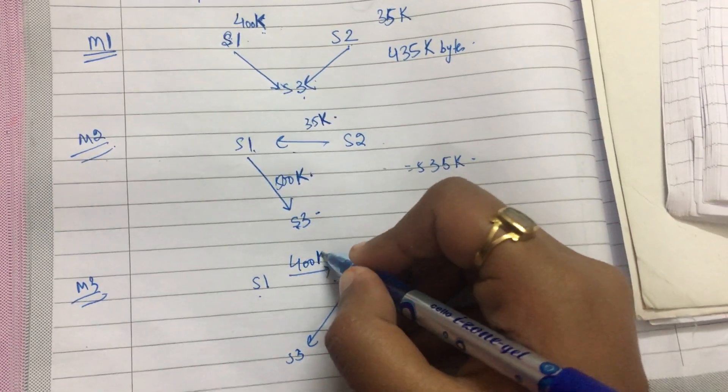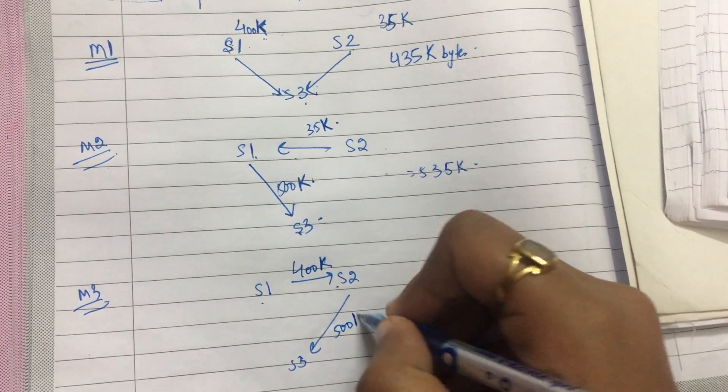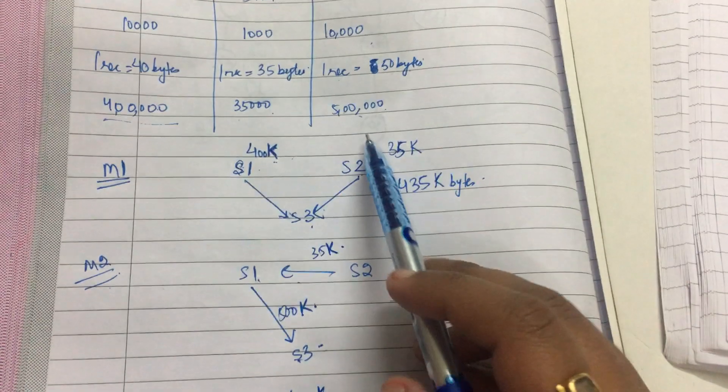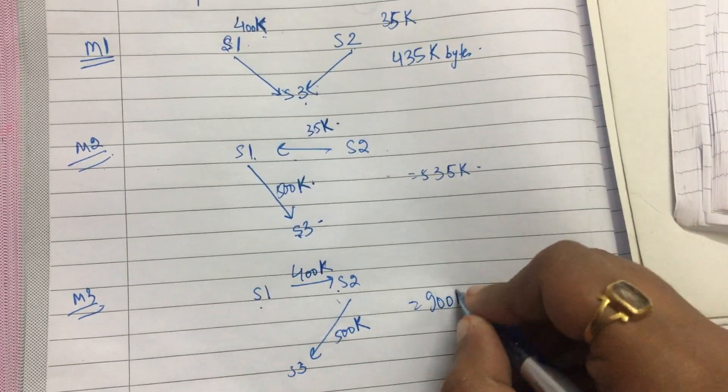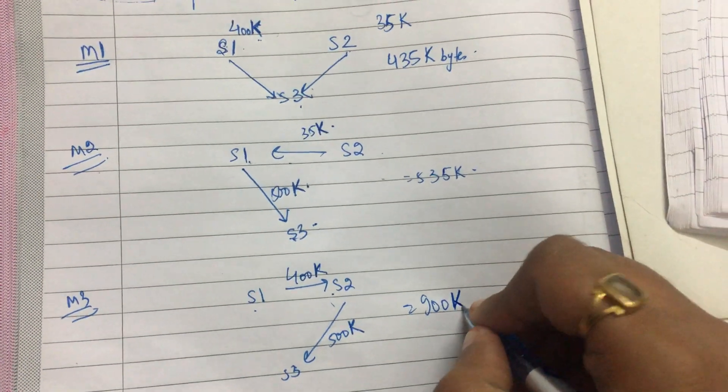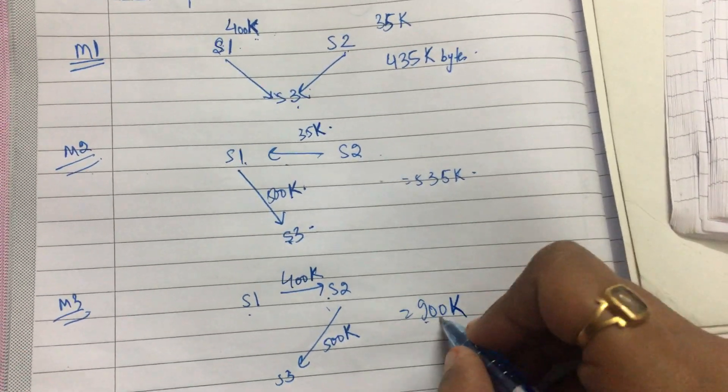then I send to S3. So when I send from S1 to S2, I will send 400K of data, and then here I will send again 500K of data because S3 has 500 data. So that is 900 kilobytes, that is 9 lakh bytes of data will be sent.